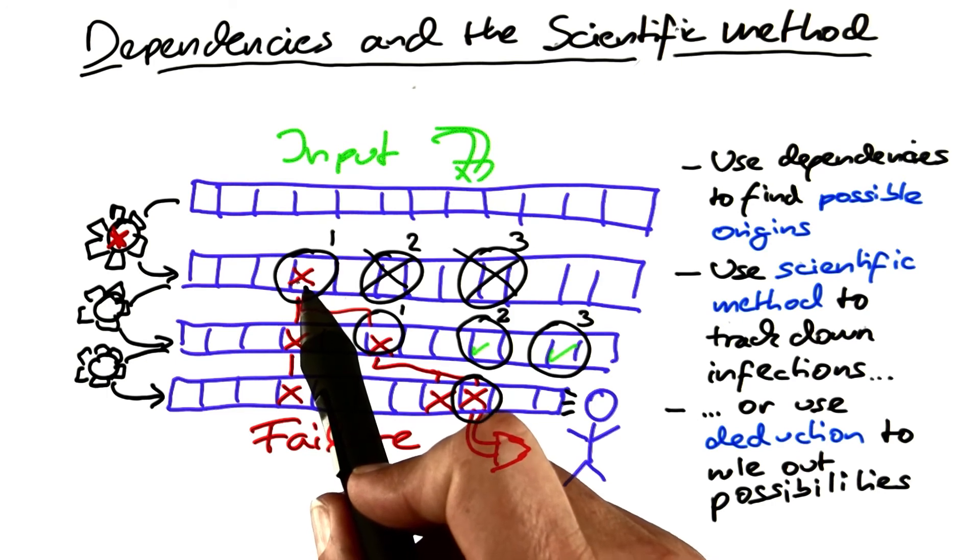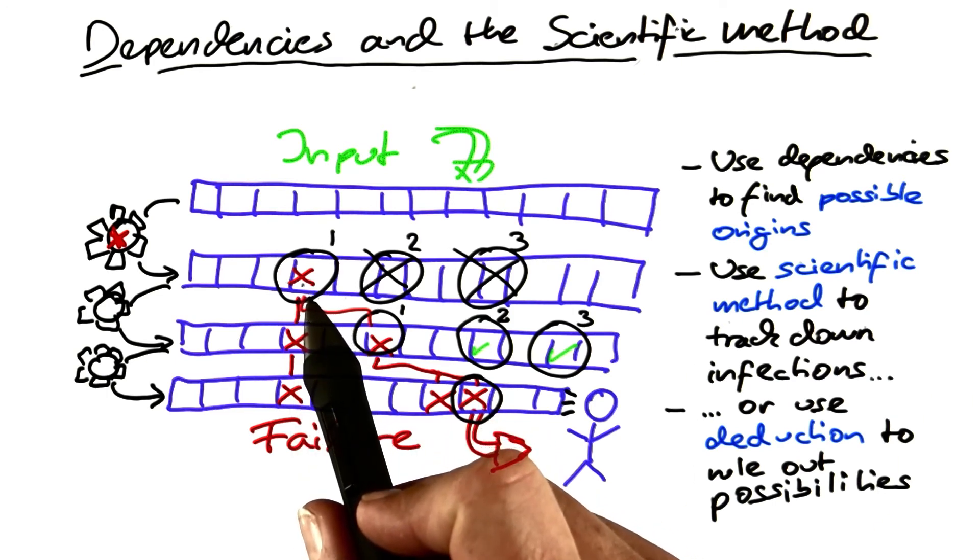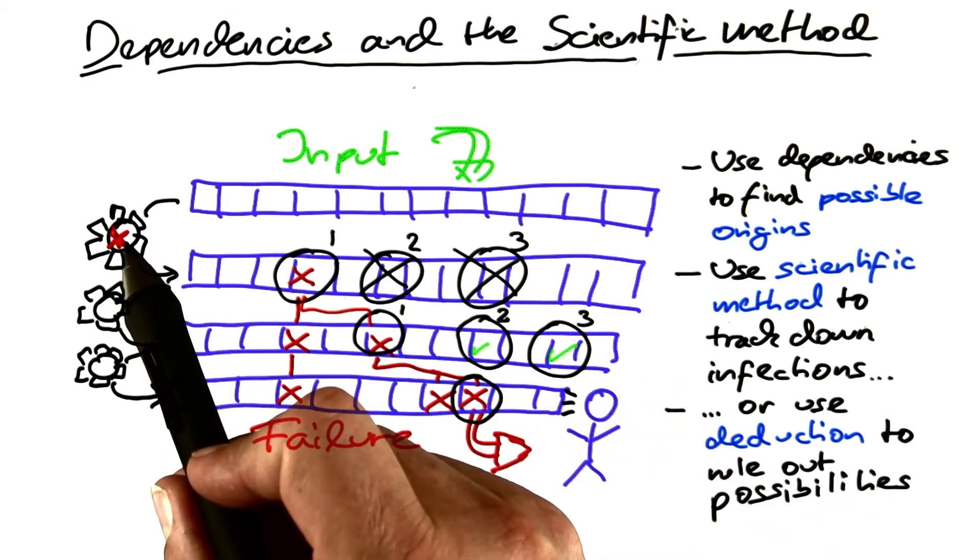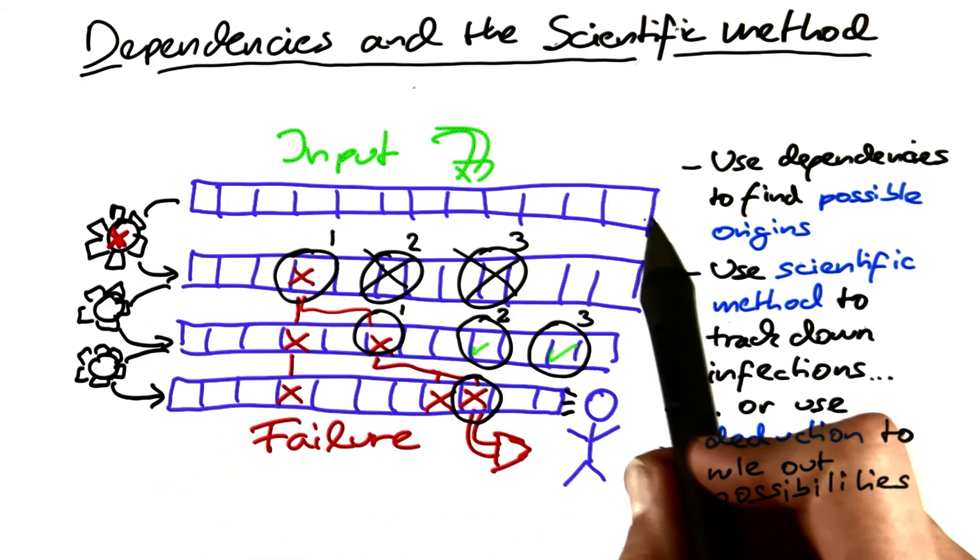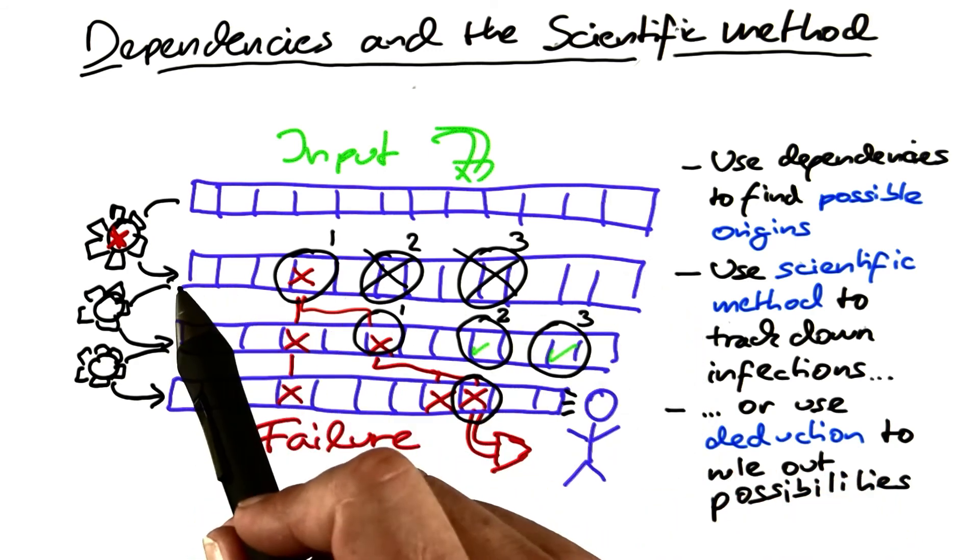You repeat the process until you find a statement whose ingoing state is all correct, but where the outgoing state is infected.